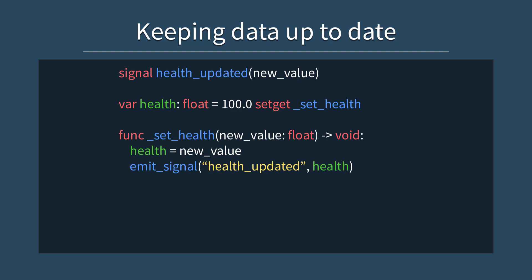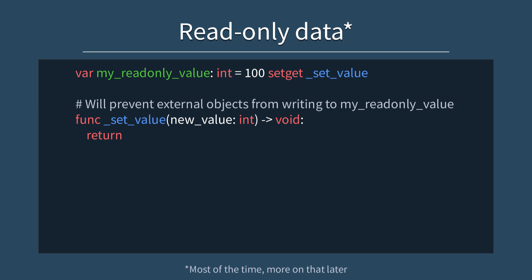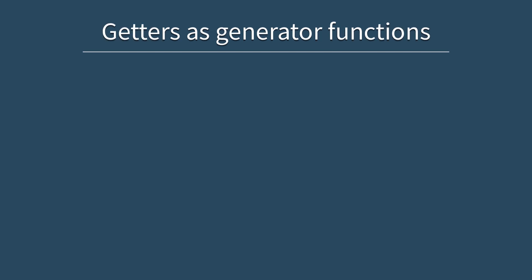By similar logic, you can make a variable read-only by overriding the setter function to return without setting the variable to the new value. Note that this method only protects external objects from writing the value — internally, an object is unprotected by default. But more on that in just a bit.